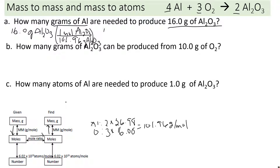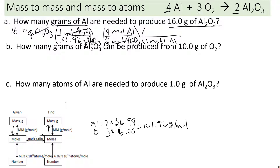The grams cancel, so now we're at moles. Our next conversion is the mole ratio: we need moles of Al₂O₃ on the bottom — that has a 2 — so we put 2 moles Al₂O₃, and we want aluminum on top — that has a 4 — so 4 moles of aluminum. That's the mole ratio step from the balanced reaction. The moles of aluminum oxide cancel. Our last step: since we were asked for grams, we use the molar mass of aluminum — 1 mole of aluminum equals 26.98 grams.